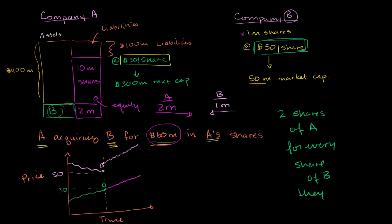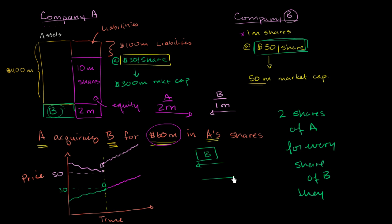In the last couple of videos, we set up a scenario where company A intends to acquire company B. They're going to do it by issuing 2 million shares and giving those shares to the shareholders of company B. Company B shareholders will give all of their ownership away — an exchange of 2 million company A shares for 1 million company B shares. On a per share basis, owners of company B give up one share and in exchange get 2 shares of company A.